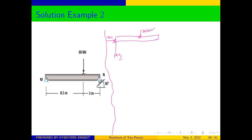The distance from this point to that is 8.5 meters, and the 60 kilonewtons force acts there. The distance from this point to that point is 3 meters. And we are told that there is a rocker inclined at 30 degrees.